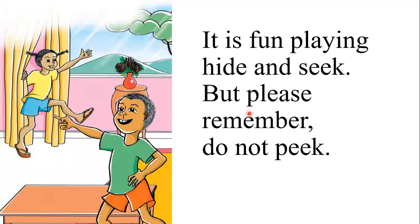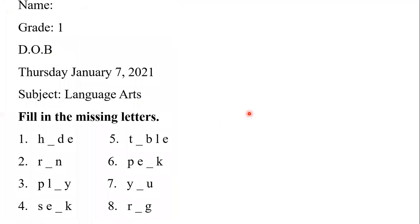It is fun playing hide and seek, but please remember, do not peek. Now, in your writing books, write your name, grade one, D-O-B — that stands for date of birth — so write your date of birth beside D-O-B. Then write Thursday, January 7, 2021. Subject: language arts. You're going to fill in the missing letters.